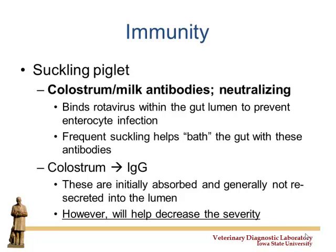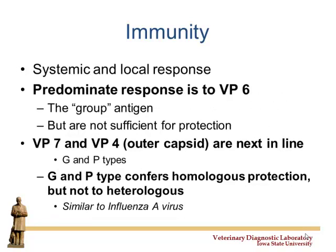The VP4 and VP7 are important for that neutralization. If those two don't match up, it doesn't matter if you have antibodies — if they're not neutralizing that specific isolate, it's still going to infect the cell. Antibodies are made most often to the VP6 group antigen, but that's not sufficient for protection because it's not preventing cell entry. So the VP4 and VP7 are by far the most important. This is very similar to influenza — it's got to be pretty homologous, otherwise it's not going to work.